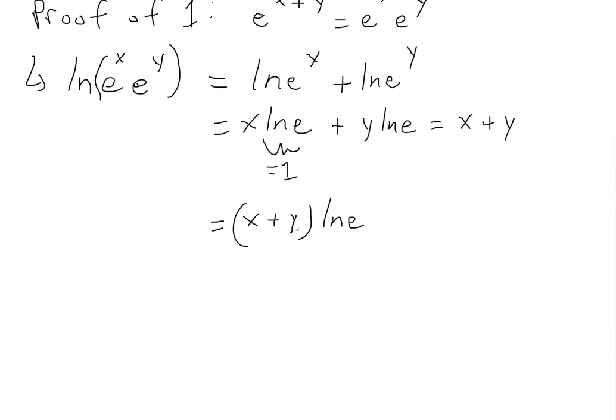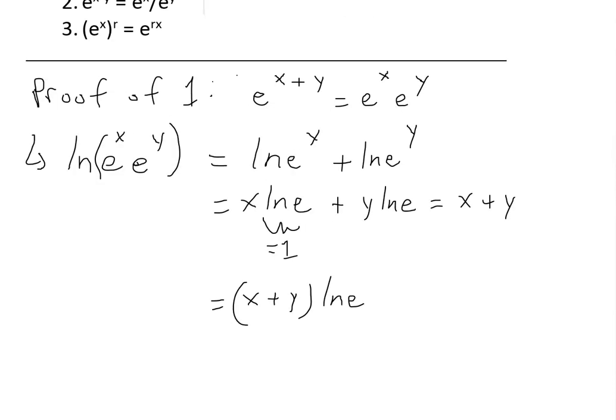We just multiply by ln e, or factor it out—same thing. The reason we're doing this is we can use the same law to bring the x back up to the exponent. So this equals ln of e to the power of x plus y.